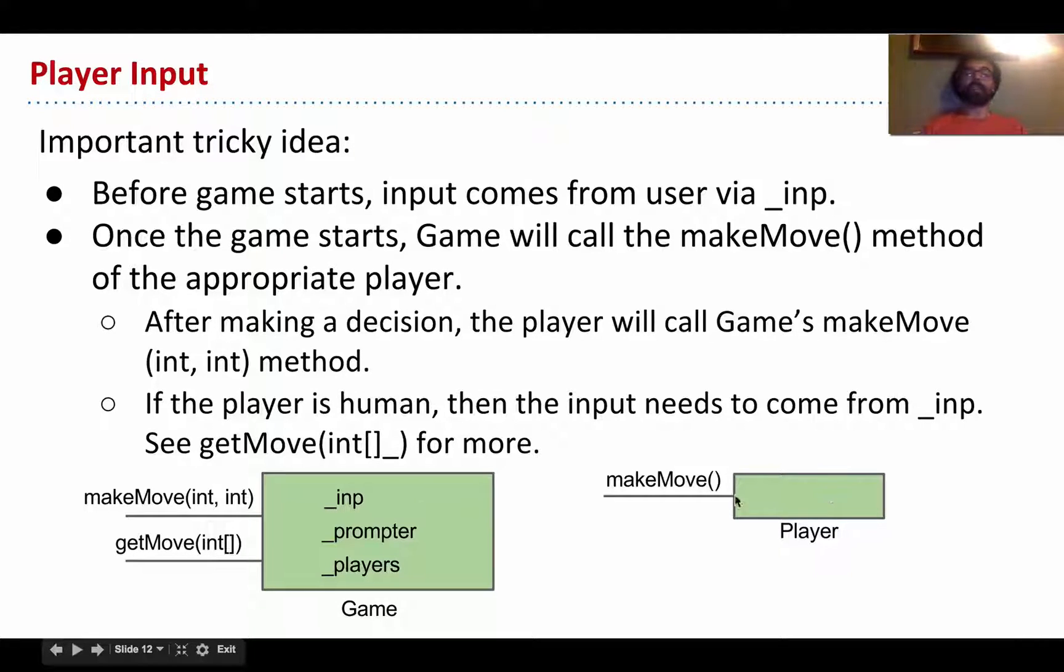And so, as long as you are in the basic mode where there's just the basic prompt, we'll keep getting input from the inp variable. Now, as soon as someone types start, things change. At this point, the game is going to start calling the makeMove method of the appropriate player. So, in other words, if it's red's turn, then the game class will look up who the red player is using its players instance variable, will call makeMove on player, and then, whatever player it is, whether it's an AI or a human, that object should then make a call to makeMove in game. So, both of these two classes have a makeMove method. This makeMove is used by game in order to tell the player to select a move.